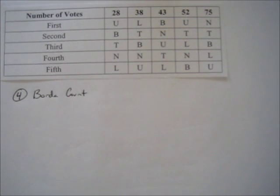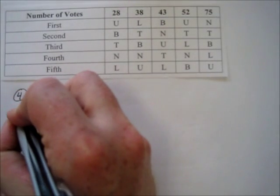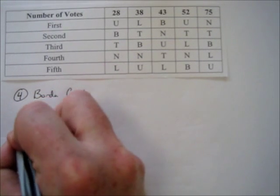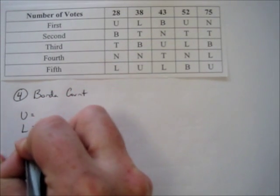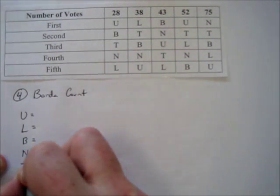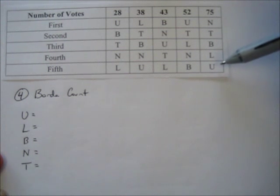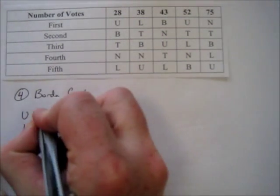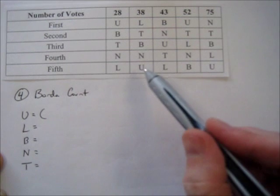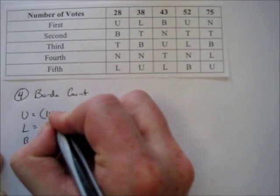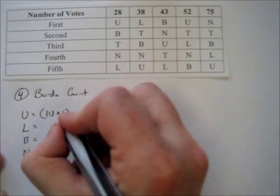Now we proceed to the Borda count method. We have our five candidates: Usher, Lifehouse, Blue Cantrell, Nelly, and Train. We calculate a point total based on the position of their votes. Starting with Usher, the fifth-place row is worth one point each — 38 plus 75 people gave him fifth place, so that's 113 fifth-place votes, each worth one point.